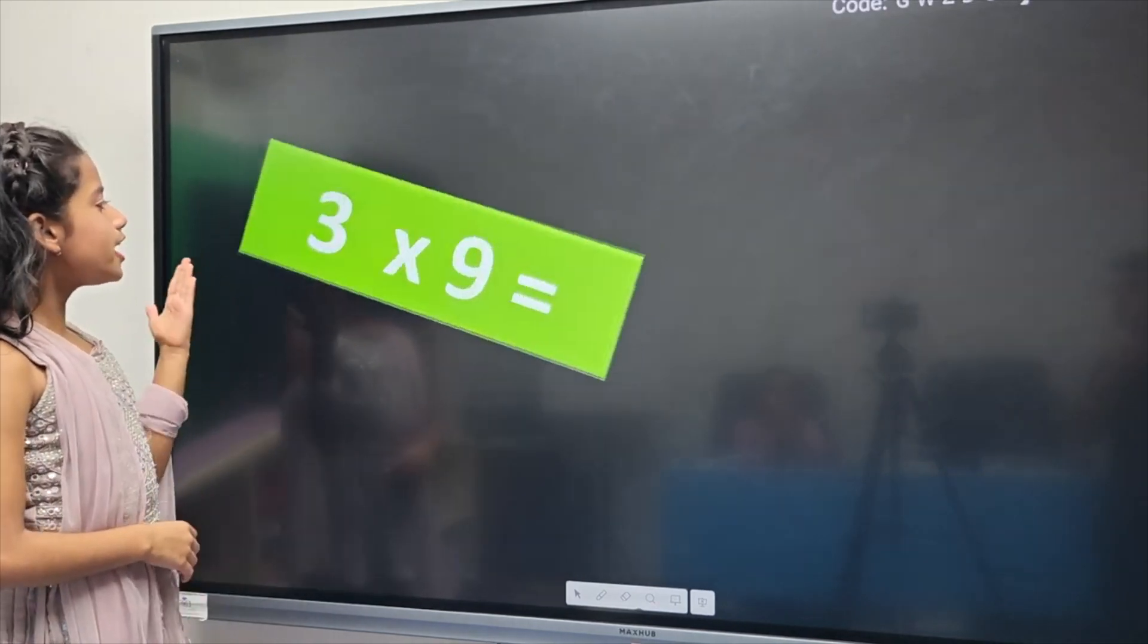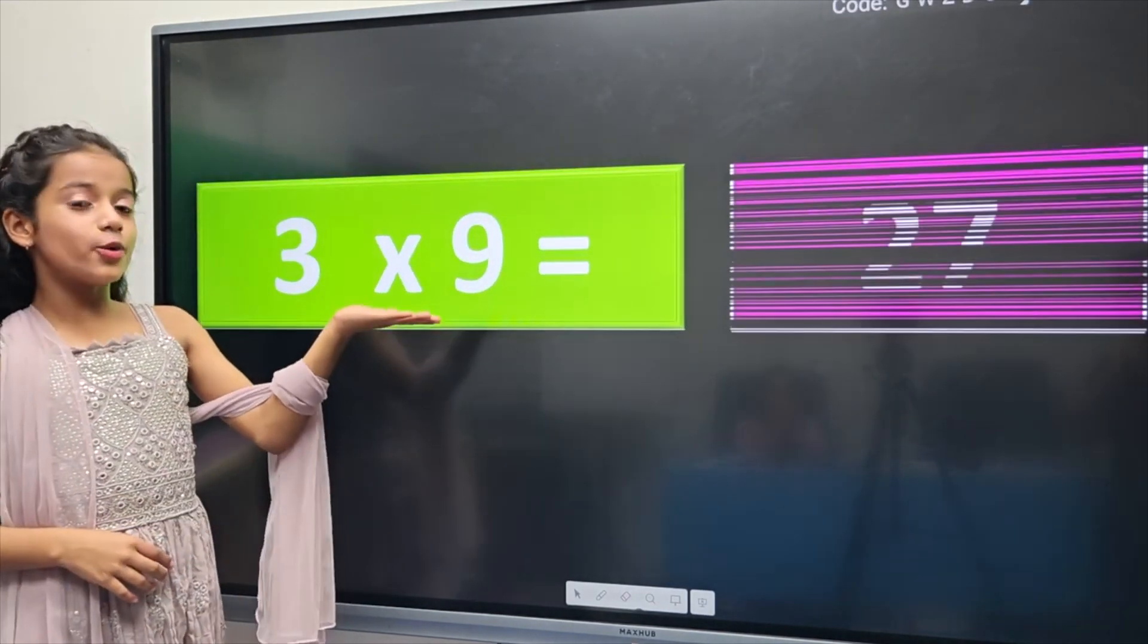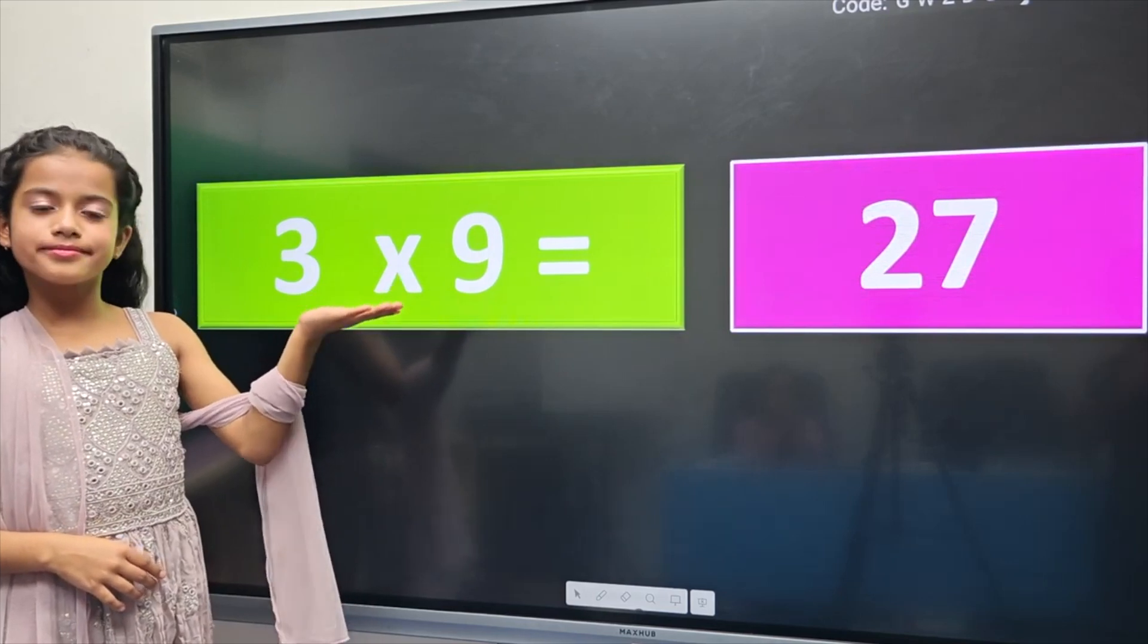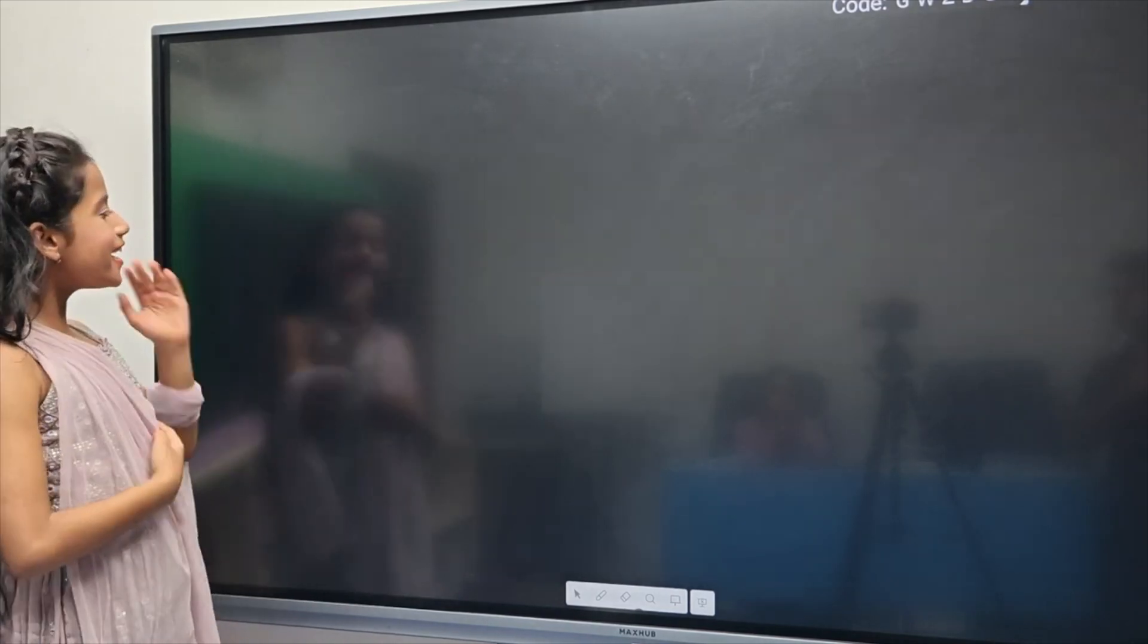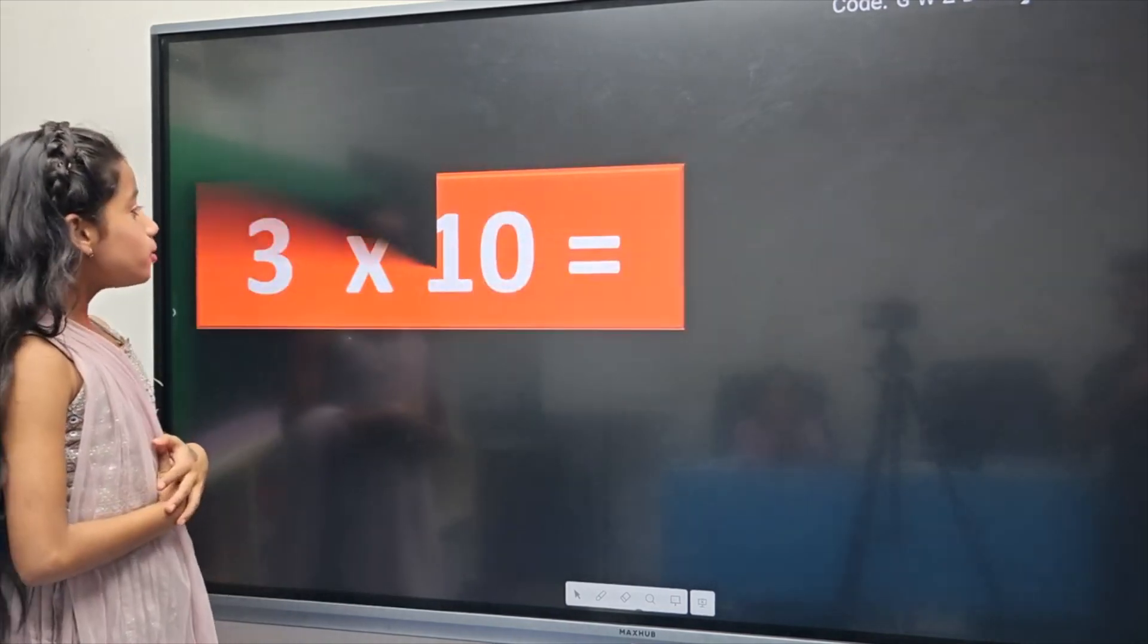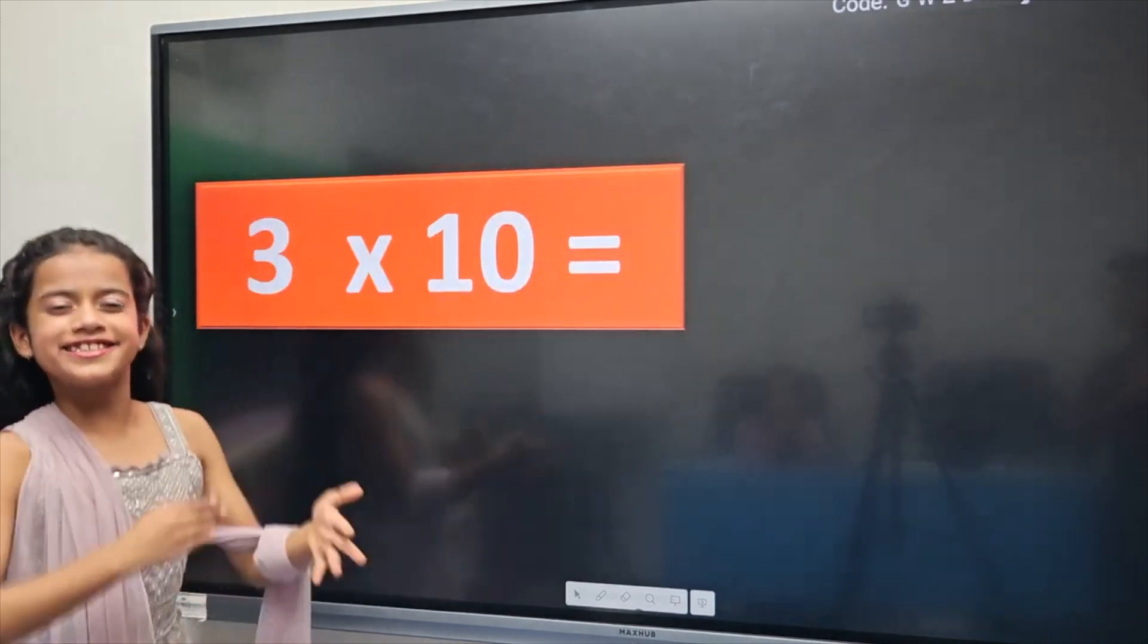Three nines are twenty-seven. Three nines are twenty-seven. Three tens are thirty.